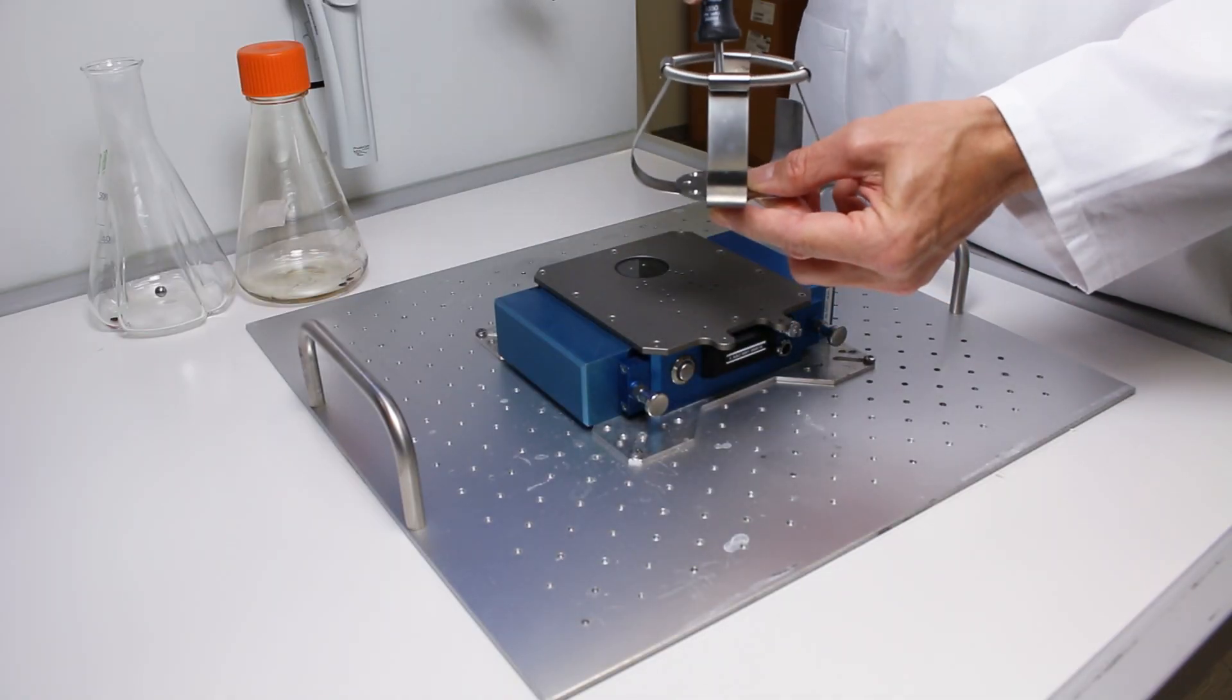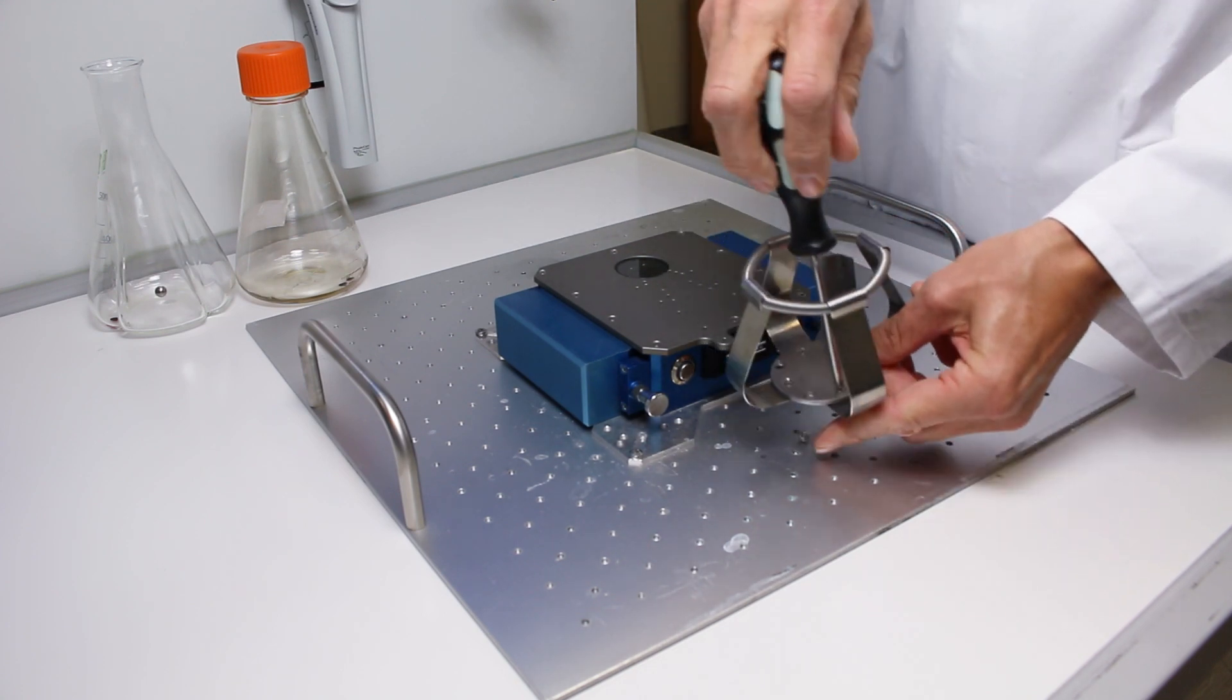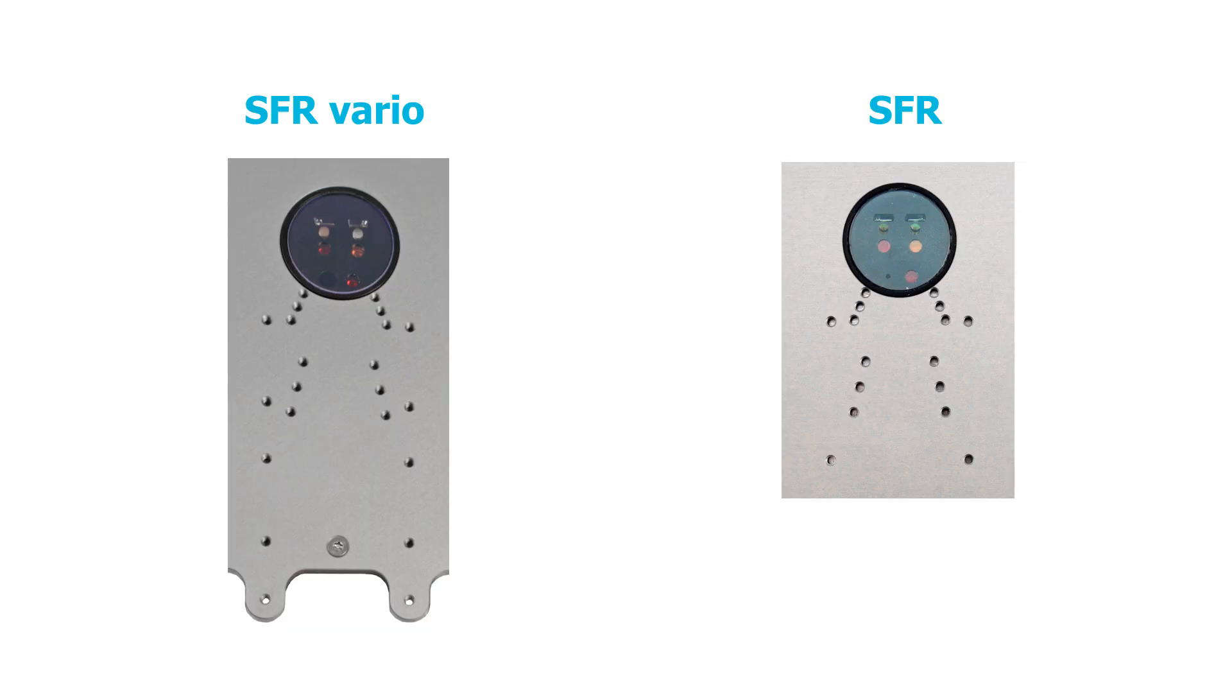Unscrew the nuts of the four M3 screws holding the base plate. Then choose the right holes according to your flask size on the SFR or the SFR Vario.